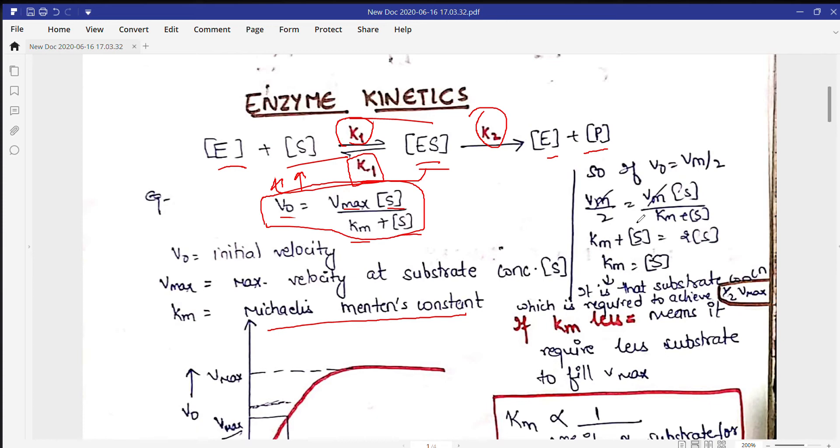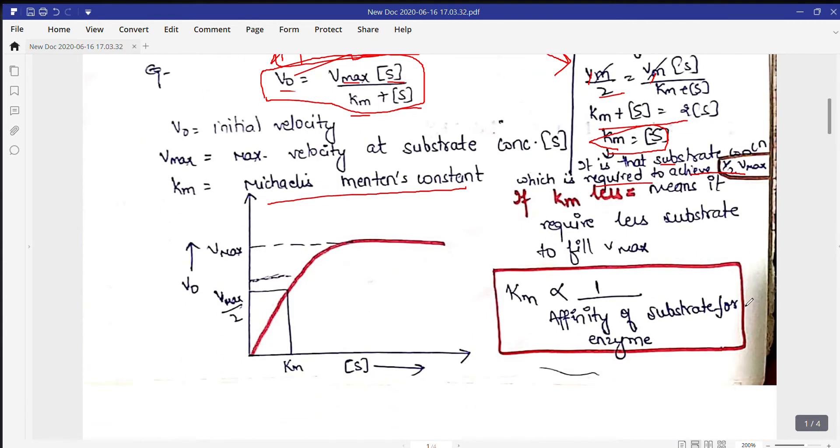Let's discuss how this Km can be defined. Just take an example: if V0 is Vmax by 2, then this V0 will come here. At this position, V0 becomes Vm by 2, and this Vm plus S, Km plus S. Now this Vm will cancel with this Vm, and this will remain. Finally, this Km becomes equal to the substrate concentration. That means this whole equation means Km is that substrate concentration which is required to achieve half Vmax. We call this Km, the Michaelis-Menten's constant.